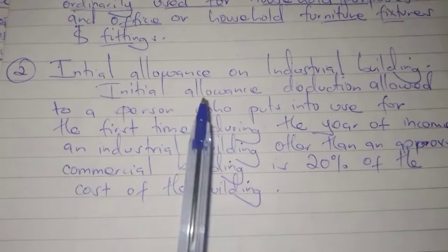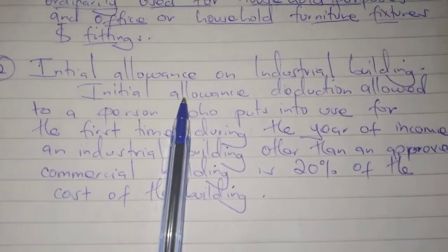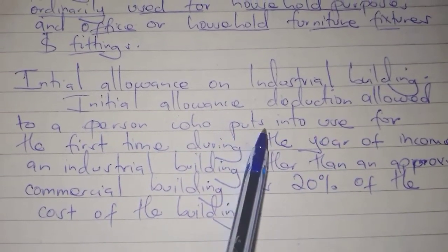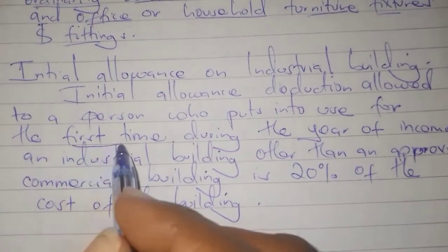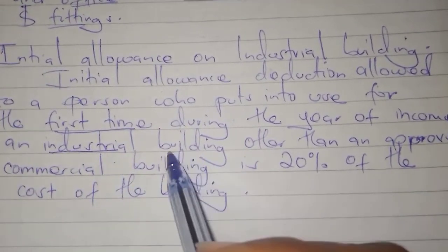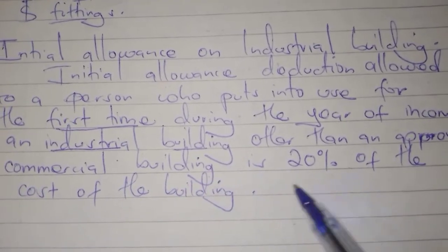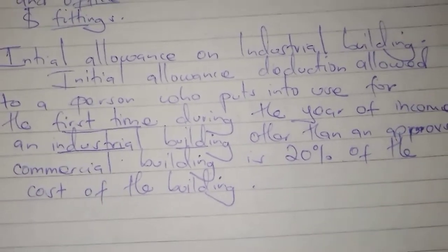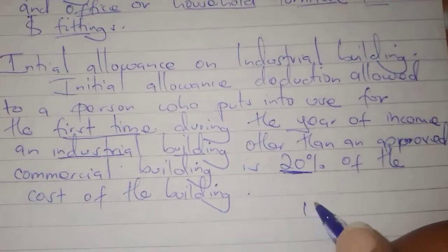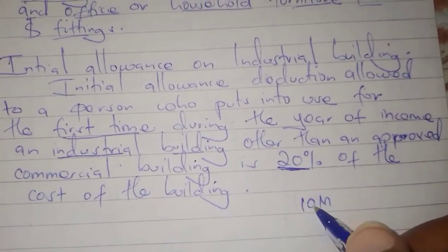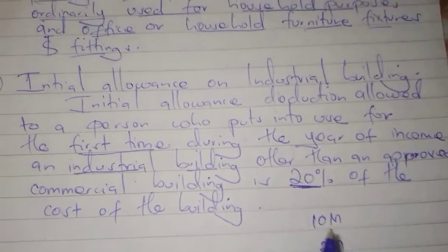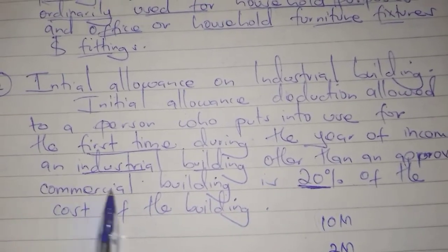Initial allowance on industrial building is a deduction allowed to a person who puts into use for the first time during the year of income an industrial building, other than an approved commercial building. The rate is 20% of the cost of the building. For example, if the cost of the building was 10 million, then 20% of 10 million — which is 2 million — becomes the initial allowance.